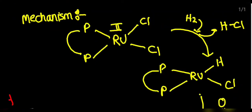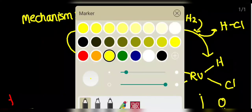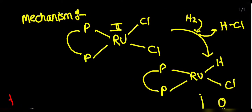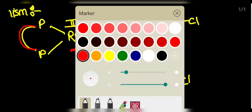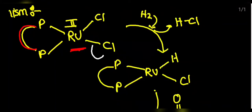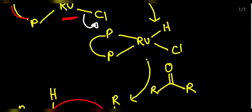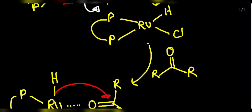Let us focus on the mechanism of the Noyori Asymmetric Hydrogenation. This is the catalyst — a complex of ruthenium and BINAP. BINAP is the diphosphine ligand. Instead of writing the complete structure of BINAP, we just write phosphine and represent the remaining structure. This complex is used for the hydrogenation of the ketone. The first step is: to this complex, we add the hydrogen molecule. One of the Cl ligands will be removed, which will combine with one of the hydrogens, and the Cl will be replaced by one of the hydrogen molecules. After that, the ketone molecule to which hydrogenation occurs is introduced.